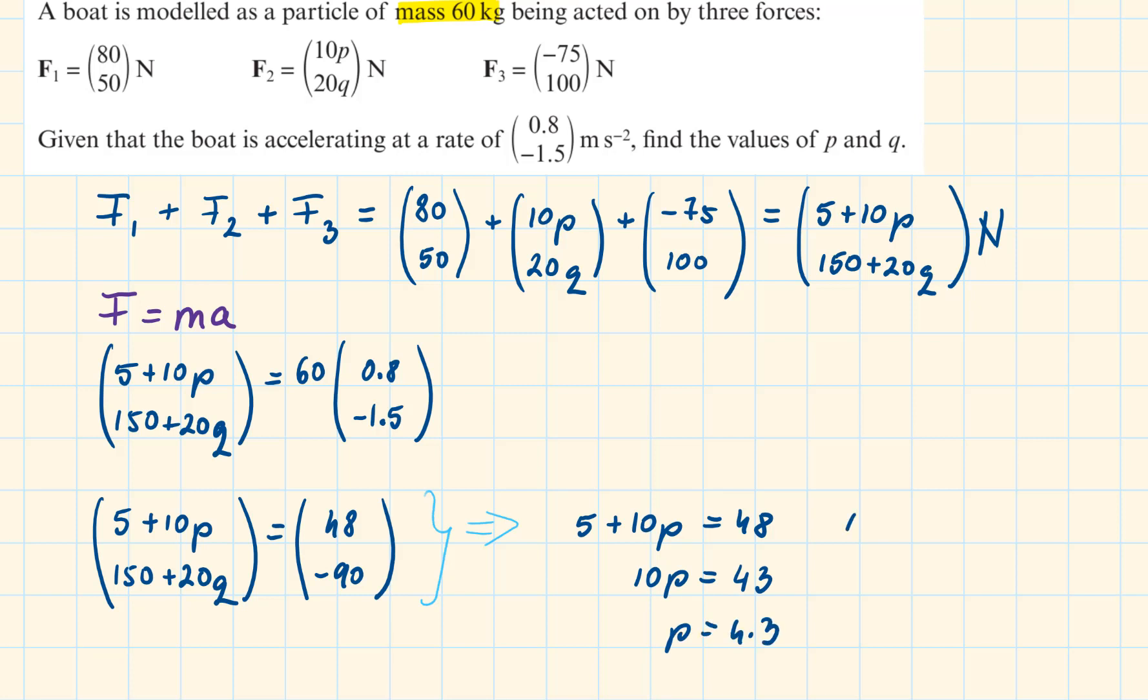Writing out an equation for the y direction, we will have 150 plus 20Q is equal to minus 90. Solving it for Q is equal to minus 12 and these are the two values that were required.